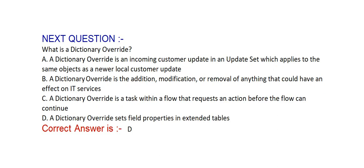What is a dictionary override? Option A: a dictionary override is an incoming customer update in an update set which applies to the same object as a newer local customer update. Option B: a dictionary override is the addition, modification, or removal of anything that could have an effect on IT services. Option C: a dictionary override is a task within a flow that requests an action before the flow can continue. Option D: a dictionary override sets field properties in extended tables. Correct answer is option D — a dictionary override sets field properties in extended tables.